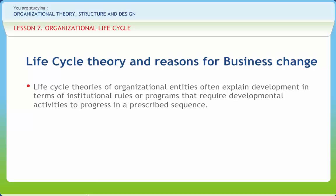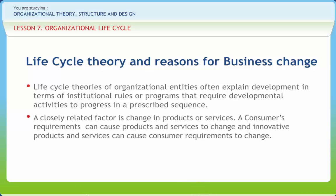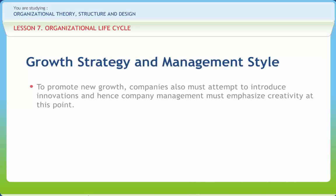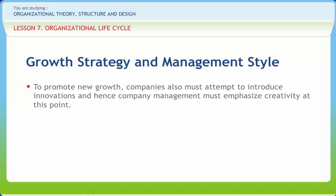A variety of factors contribute to the passage of companies through the OLC. Changes in customer preferences may cause both companies and their respective industries to move into another development stage. A closely related factor is change in products or services — consumer needs and wants can cause products and services to change, and innovative products and services can cause consumer needs and wants to change. To promote new growth, companies must attempt to introduce innovations, and company management must emphasize creativity. Maturity and decline tend to result from companies becoming habituated to doing business a certain way during the startup and growth stages and being unable to break these business habits when they cease to be fruitful.